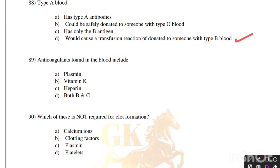Anticoagulants found in the blood include: plasmin, vitamin K, heparin, or both B and C. Correct answer is option D, both B and C — vitamin K and heparin.